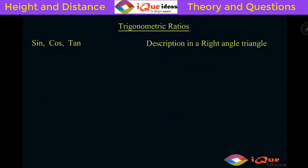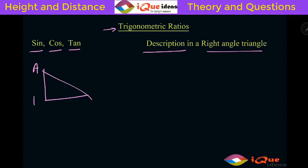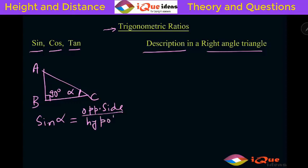There is some application of trigonometric ratios in questions of height and distance. We will take some basic ratios of trigonometry — that is sine, cos, and tan — and describe them in a right-angle triangle. Let us say there is a right-angle triangle ABC where this angle is 90 degrees. We have done this in 9th and 10th standard; I will just take a revision of that.